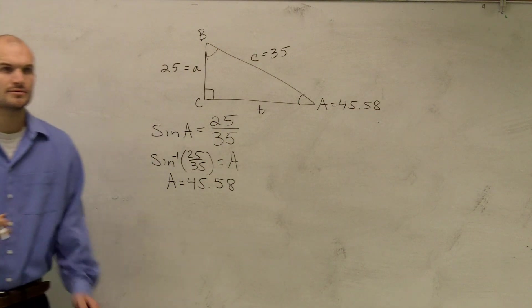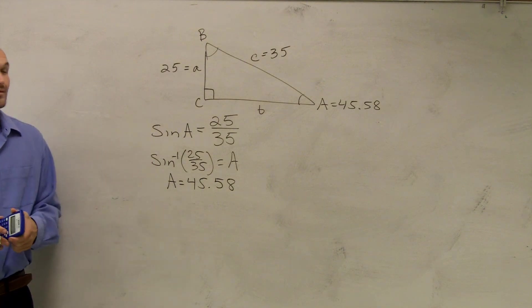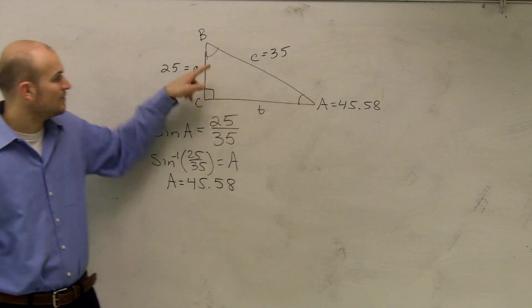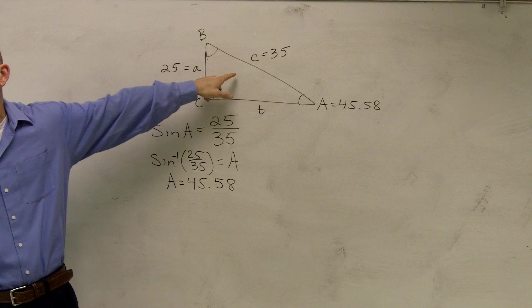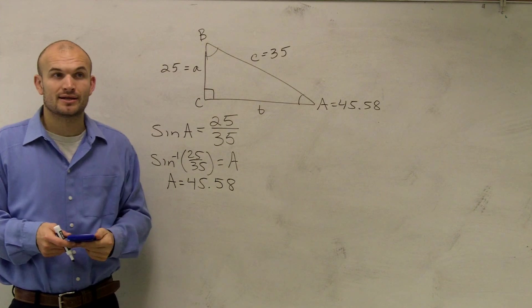Did everybody follow me? Good? So ladies and gentlemen, from here, now you know this is 90 degrees and this is 45.58. We could easily figure out what B is, right? Just add them up and then subtract from 180?